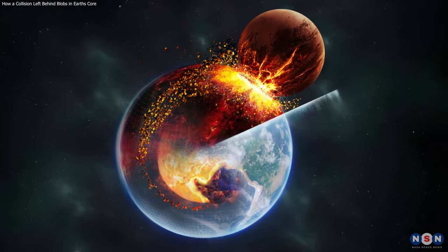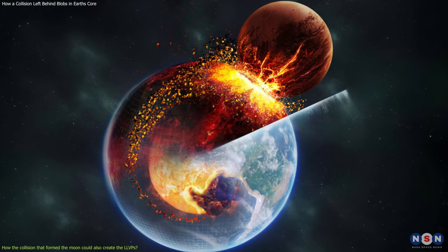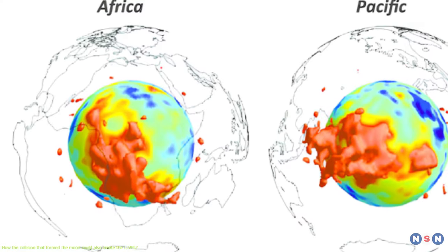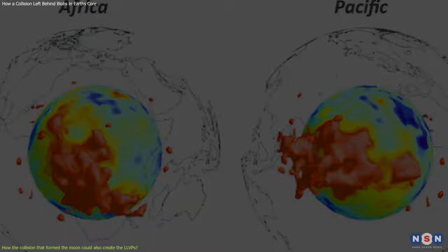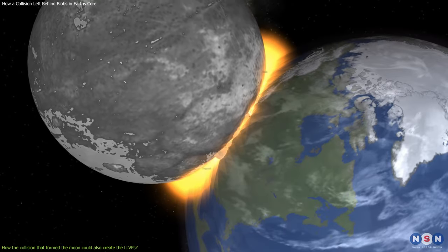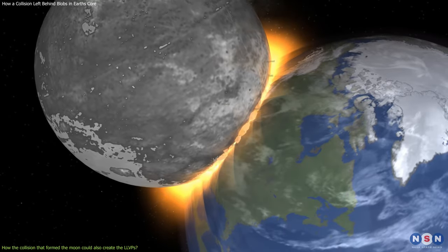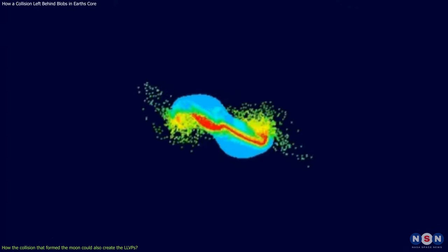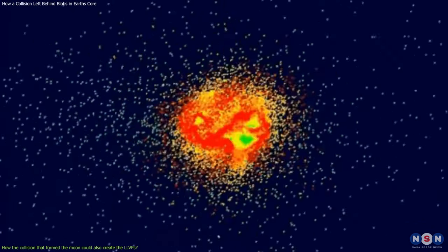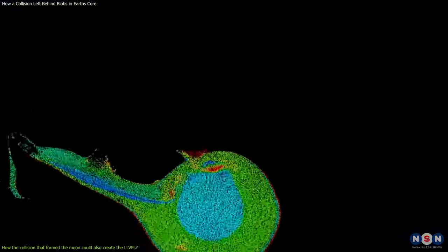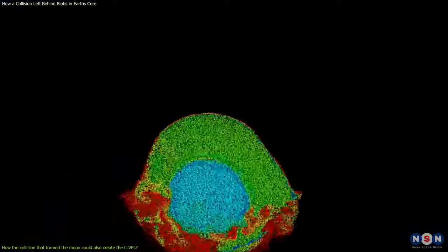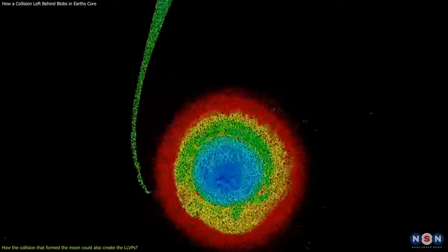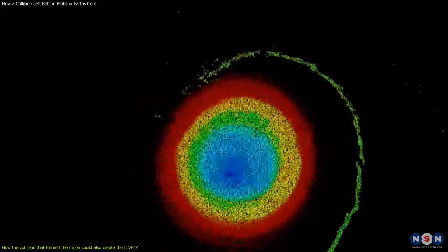Now, let's move on to the new theory that proposes that the collision that formed the Moon could also create the LLVPs. This theory is based on the idea that the impact between Earth and Theia was not a head-on collision, but a glancing blow, where Theia hit Earth at an angle. This means that some of Theia's material did not vaporize or merge with Earth, but remained intact and continued to orbit around Earth.